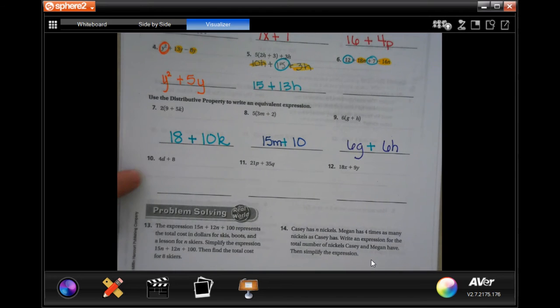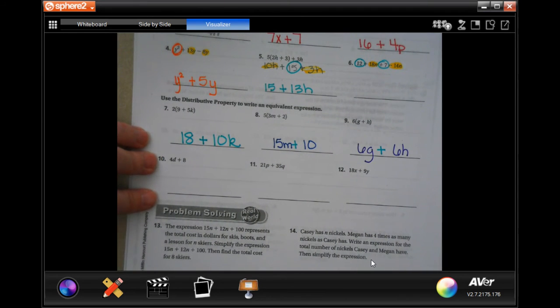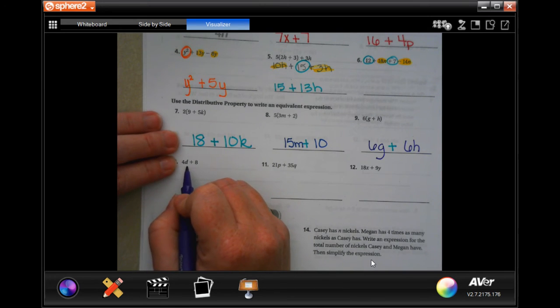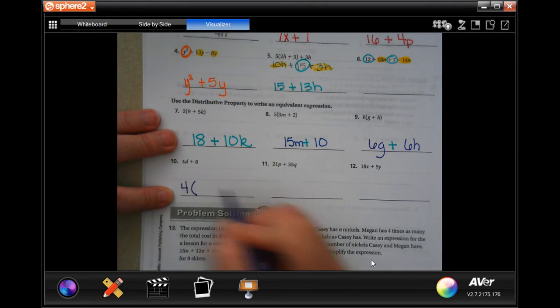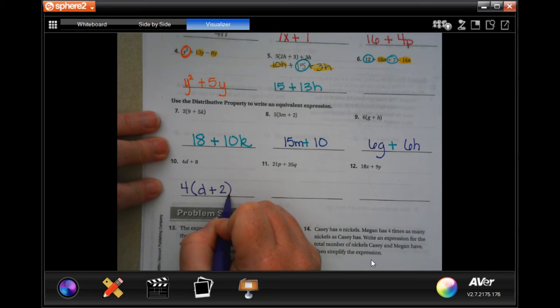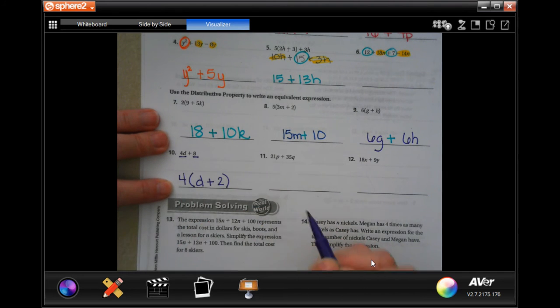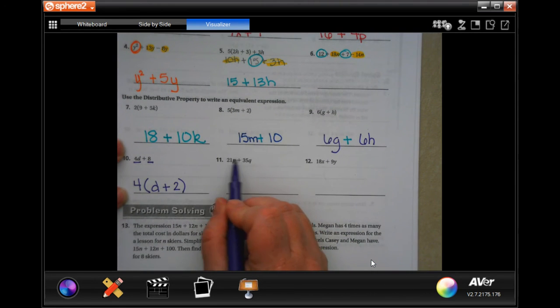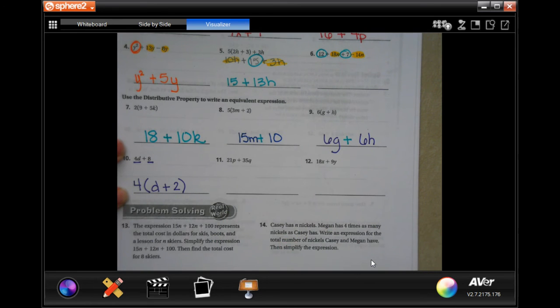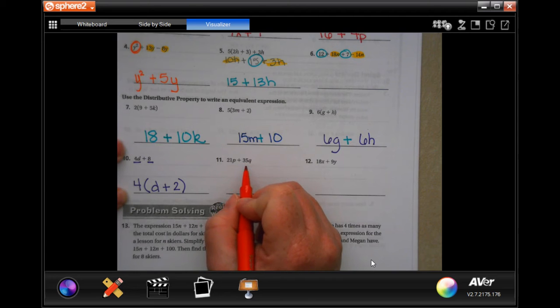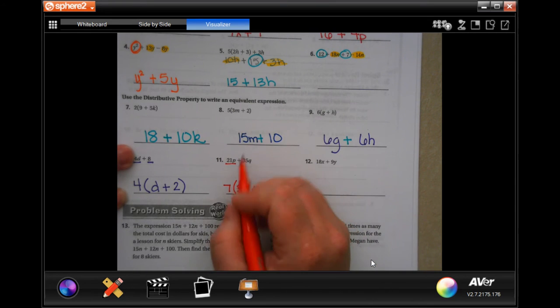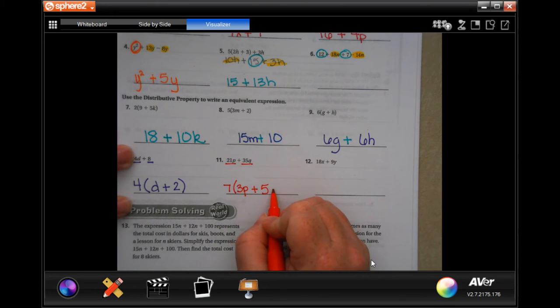So now this one, it wants us to pull out a number that can be used on both of those. So let me give you an example. 4 goes into 4d, and it goes into 8. So I'm going to pull that 4 out, and I'm going to put it onto d plus 2. Now let me show you why. Because 4 times d is 4d, and 4 times 2 is 8, and I have the addition sign in the middle.